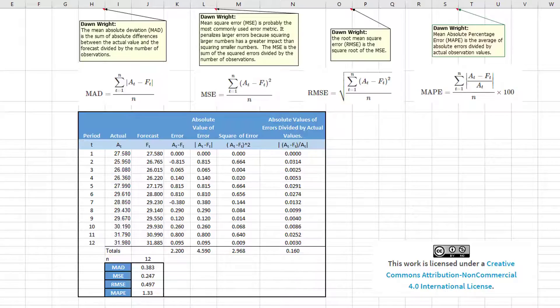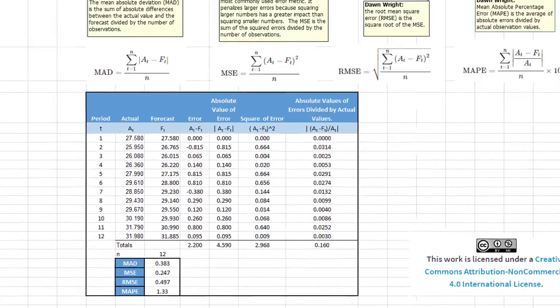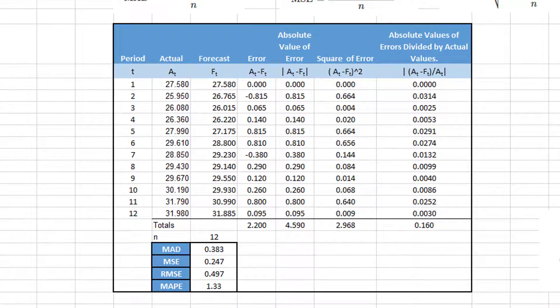The example I used was just a hypothetical set of numbers that really did not have a basis in fact, but this table shows that the four error metrics range from 0.247 to 1.33. Are the metrics comparable? Will MAPE always be larger than MAD?